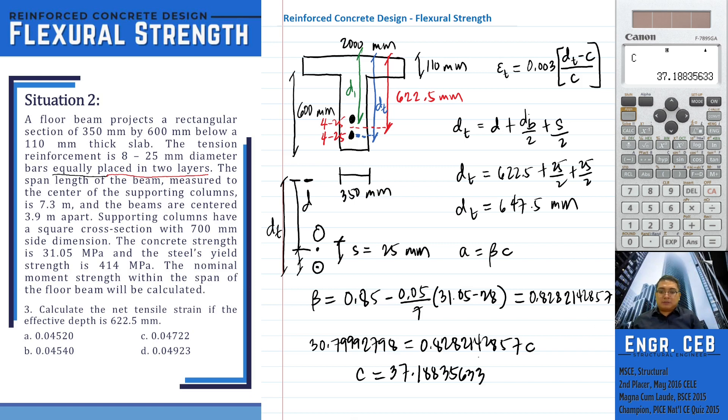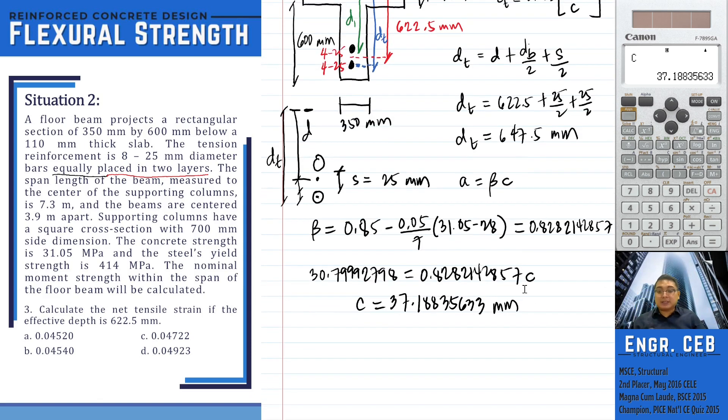We now have D sub T and C. So we can now compute for the net tensile strain, E sub T.